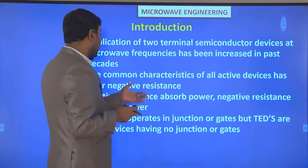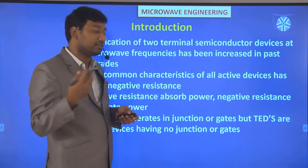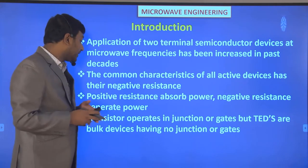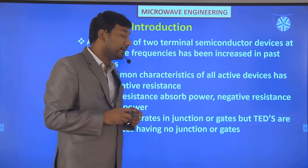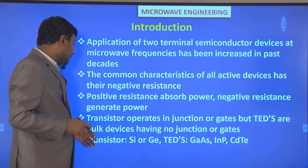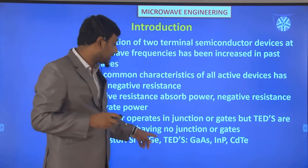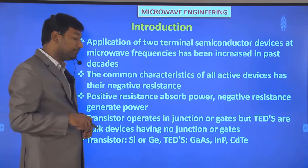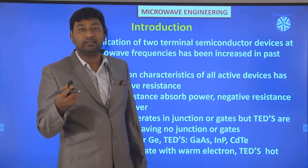Now, why are we not using transistors but instead using transferred electron devices (TEDs)? Transistors operate in junctions — they have different junctions and gates. But TEDs are bulk devices having no junction or gates. Another key difference: transistors are made from silicon or germanium, but TED devices are made from 3-5 compound semiconductors like gallium arsenide, indium phosphide, and cadmium telluride.